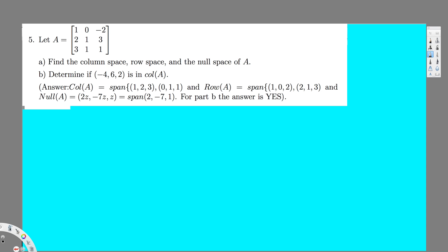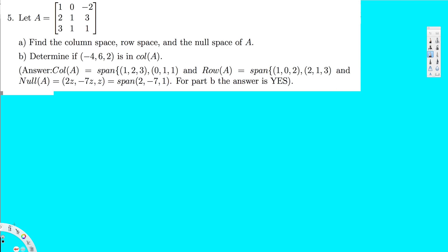Let's do this problem right here. The question is asking us to find the column space, row space, and null space of A. So first of all, to do this I have to do Gauss-Jordan. Let's bring this matrix here.